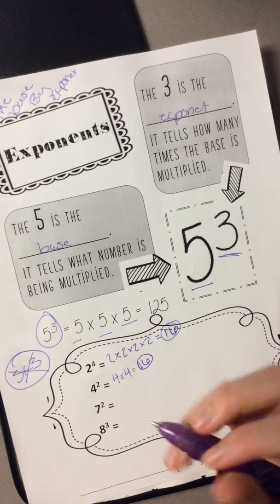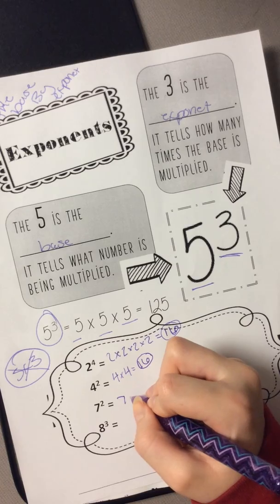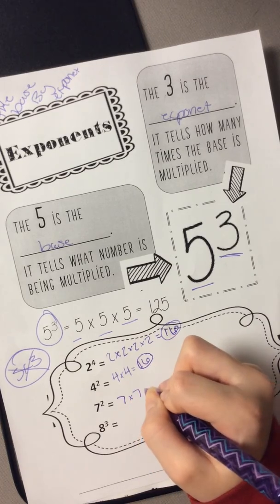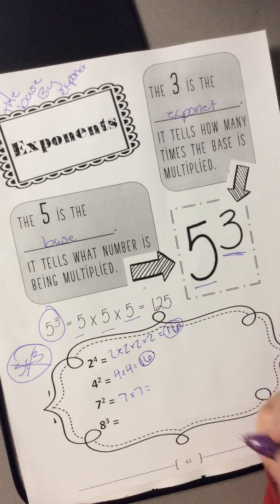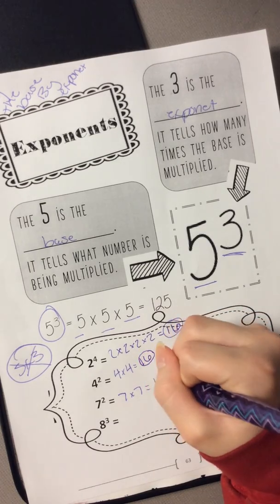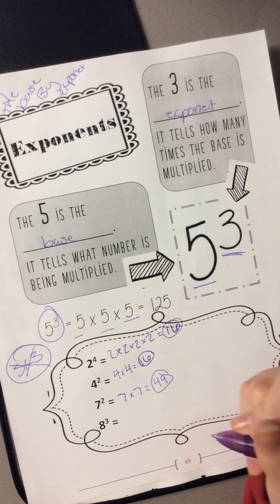The next one is your base is going to be 7 and your exponent is going to be 2. You should have got 7 times 7. I'll give you a second to think about it. You should have got 49 hopefully.